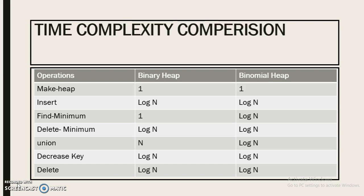But binary heap finds minimum node in constant amount of time, whereas binomial heap takes log n time. The major reason is binary heap follows minimum heap property, so root will always have minimum value.